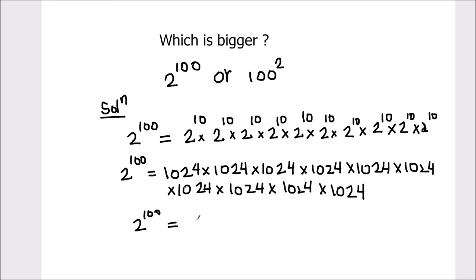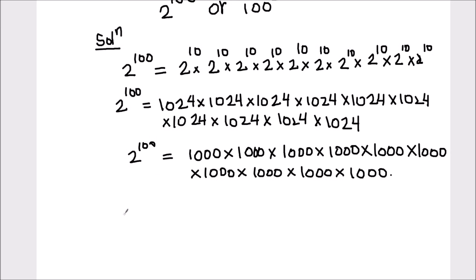And this is going to be a very big number. Or we can write 1024 as 1000, just taking the approximate value, times 1000 times 1000 up to 10 times. Or we can write 2 raised to power 100 as 1000 raised to power 10.